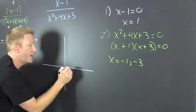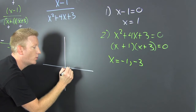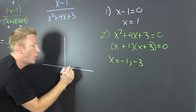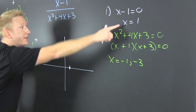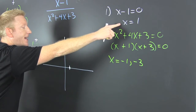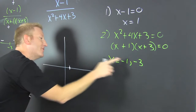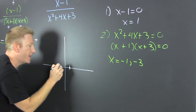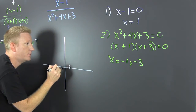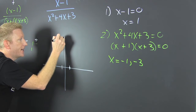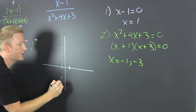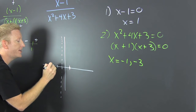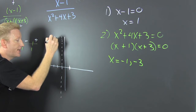Now I graph. I put my zero at x = 1, because that's the zero of the numerator. Then I draw vertical asymptotes at x = -1 and x = -3.